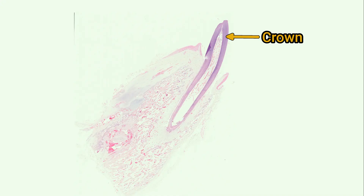Each tooth has two main parts: the crown, which is the portion that projects into your mouth, and the root, which is hidden below the gumline and is anchored into the mandible or maxilla. The area where they meet is called the neck of the tooth.